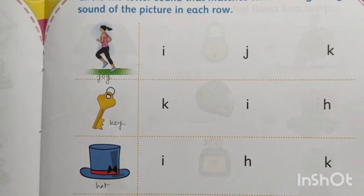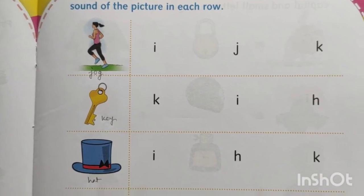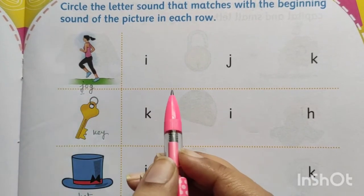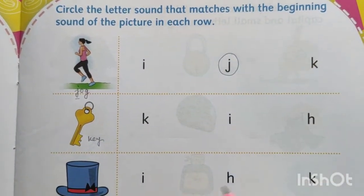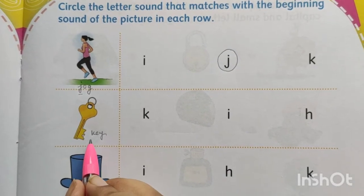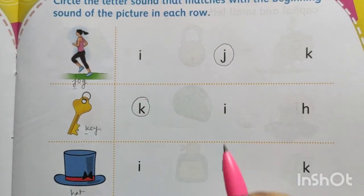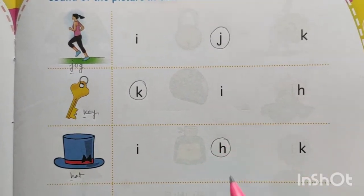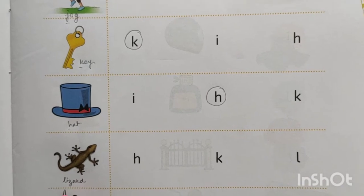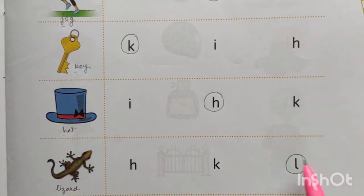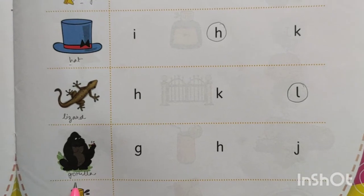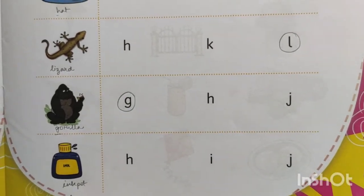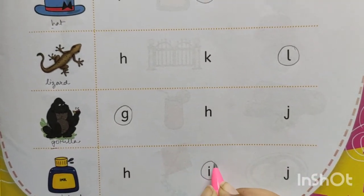Now you have to circle the correct letter. Jogging starts with letter J — circle J. Key starts with K — circle K. Hat starts with H — circle H. Lizard starts with L — circle L. Gorilla starts with letter G — circle G. And ink pot starts with letter I — circle I.